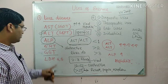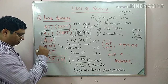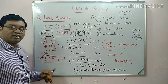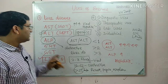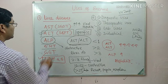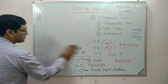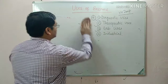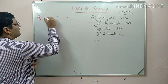LDH4 and LDH5 isoenzyme levels increase in liver disease. Now coming to the second important organ: the heart. These enzymes are also known as cardiac markers.